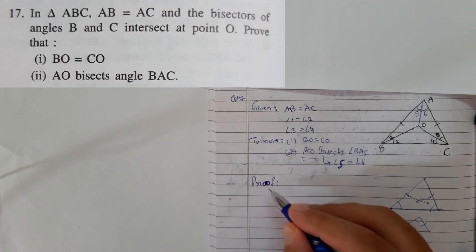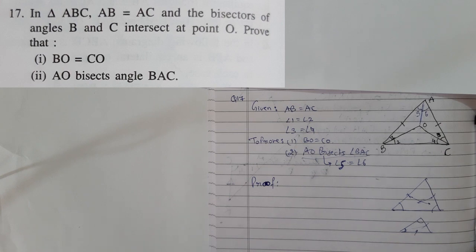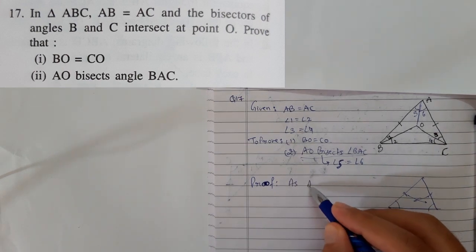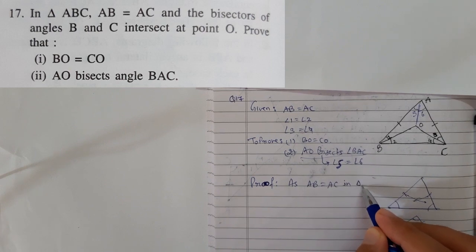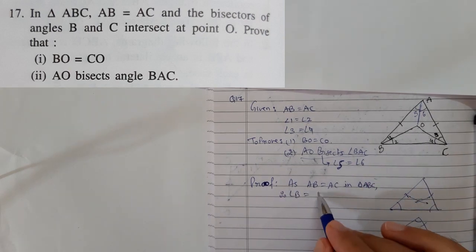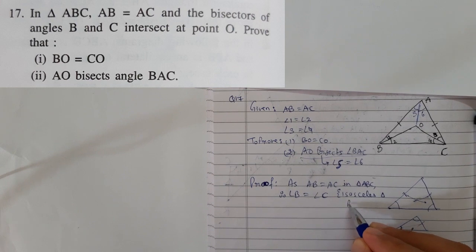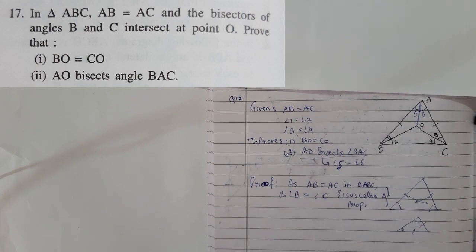Remember one thing. Understand all the properties. Then make sure you understand the given intention of the examiner. Whatever information is given is not a waste. Whatever information is there in the question, we have to use that. The 99% chances are that the information is there to help you out. So AB equals AC in triangle ABC.